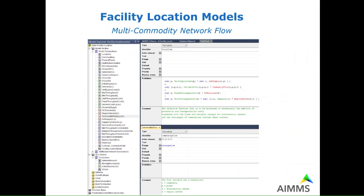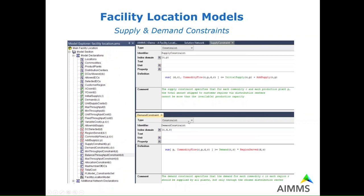More specifically, in this model the flow is modeled using the index of commodities, so this is a multi-commodity network flow problem. At the same time, we have three indices for the three layers in the network: plants, distribution centers, and regions. This is a very specific choice for how to declare the flow variable using these indices, which implies a certain way of formulating our constraints. For example, the supply constraint specifies that for each commodity and each production plant, the total amount shipped to customer regions via distribution centers cannot be more than the available production capacity.